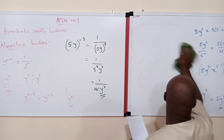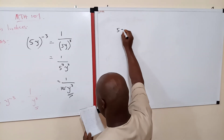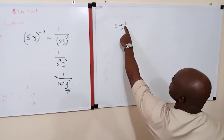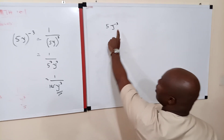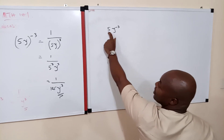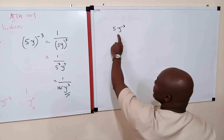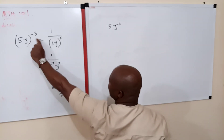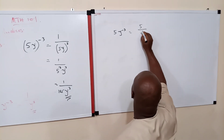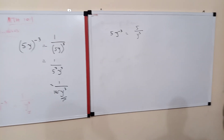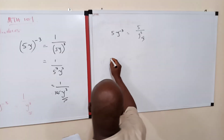Now if they are NOT in a bracket — say 5y raised to power negative 3 — the index is only affecting y, not the 5. So the coefficient here is 5. We take the coefficient 5 up to the numerator, giving us 5 over y³. We have succeeded in eradicating the negative sign.